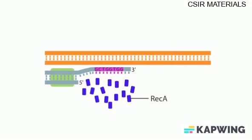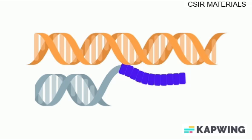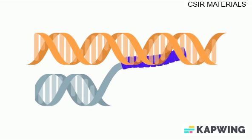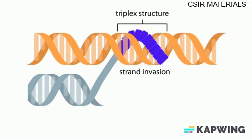A protein called REC-A coats the single-strand overhang. The REC-A coated DNA filament invades the intact double helix of the adjacent homologous chromosome, which has a similar sequence. The invading DNA initially lies within the major groove and forms hydrogen bonds with the base pairs it encounters, forming a triplex structure.